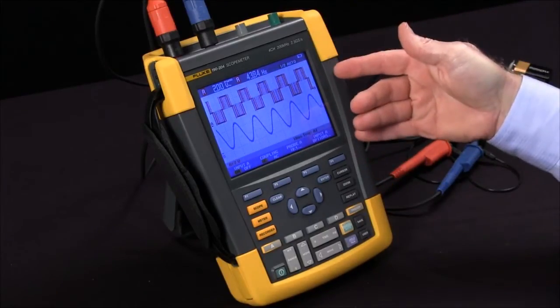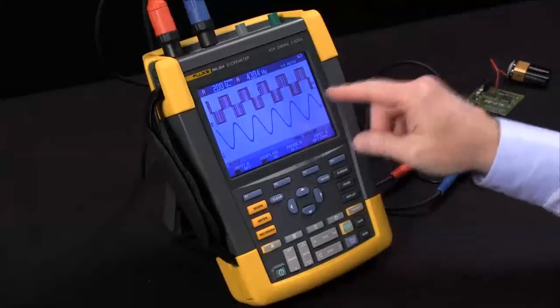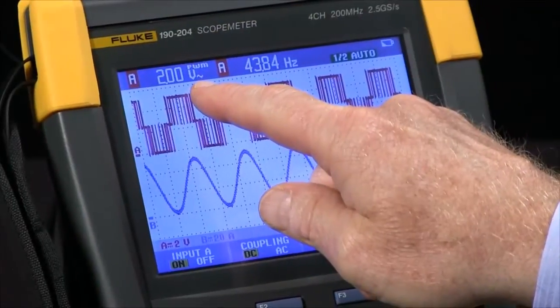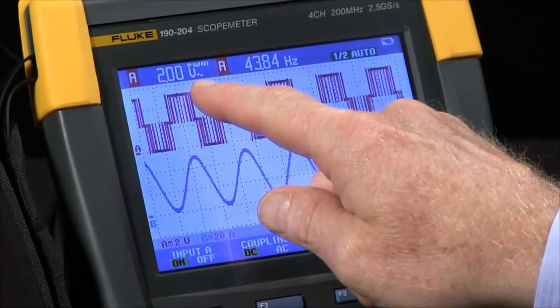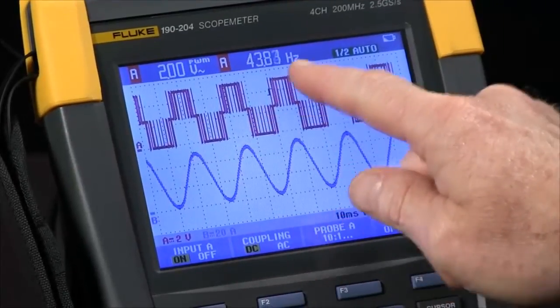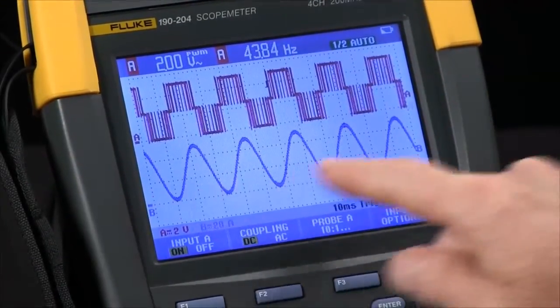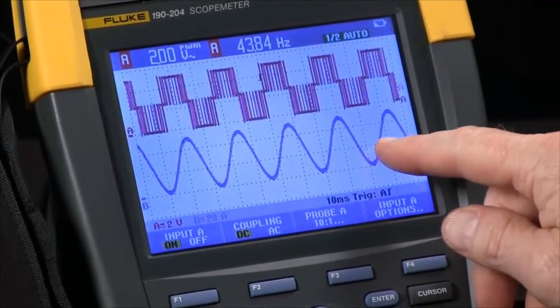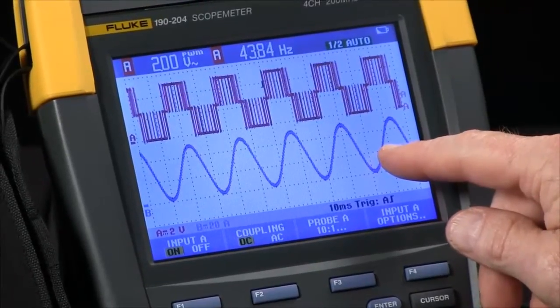Let's say you've just finished a complex setup. In this case, we're measuring VPWM, that's pulse width modulated voltage, on channel A and the frequency of a current signal on channel B. This might be a test you'd run on a variable frequency drive.